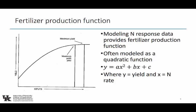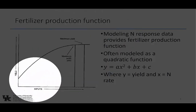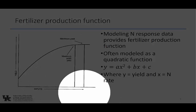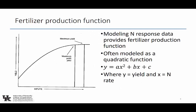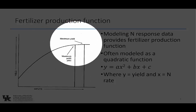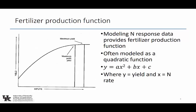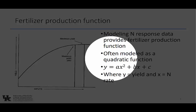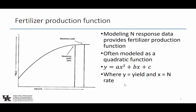We're going to do a derivative — actual calculus or algebra. So the fertilizer production function: inputs, in this case nitrogen, on the horizontal axis; yield on the vertical axis. Notice how that line curves right up. It's a quadratic formula: we've got two lines here — the nitrogen rate for maximum profit, and that's different than the nitrogen rate for maximum yield because of that diminishing return function. We often model this function as a quadratic: Y = AX² + BX + C.